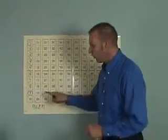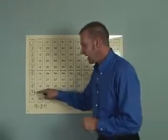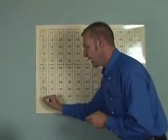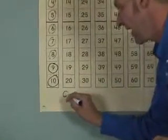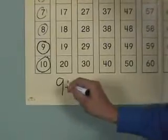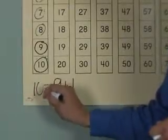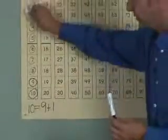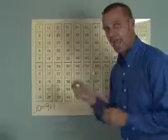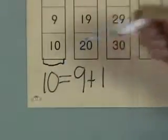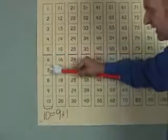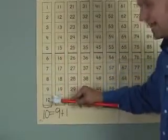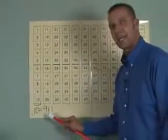Today we're going to add one more to the number nine. If I add one to nine, what do I get? Ten. What number did I have yesterday? Nine. And what did I add today? One. What does that equal? Ten. Now we have a whole ten here. I'm going to erase all of those circles and place a bracket under the ten. Can you all count with me from the very beginning? One, two, three, four, five, six, seven, eight, nine, ten. Ten equals nine plus one.